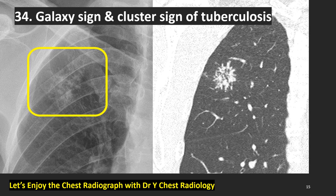How about this image? You may remember these images — galaxy sign and cluster sign of tuberculosis. Magnified view of chest radiograph, right upper lobe: this is tuberculosis — mottled, clustered, ill-defined densities. On coronal thin section lung window CT scan, cluster of micronodules with daughter nodules. Another case of cluster sign and galaxy sign of tuberculosis — quite similar with the previous images.